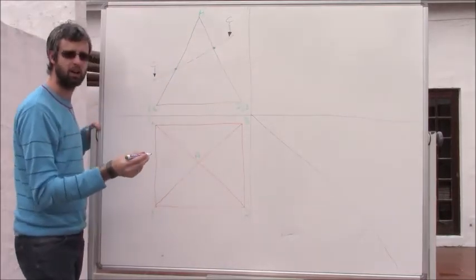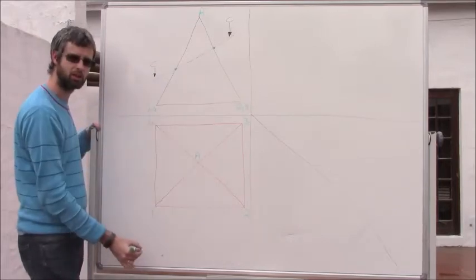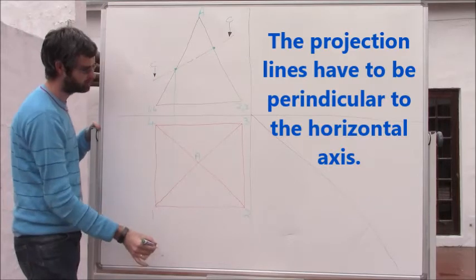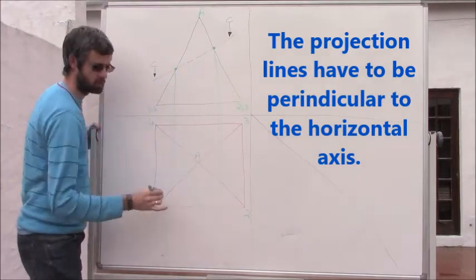Once you've done that, you take your ruler and project each of those cutting points down into your top view. Take that point and project it straight down, and take that point and project it straight down into your top view.